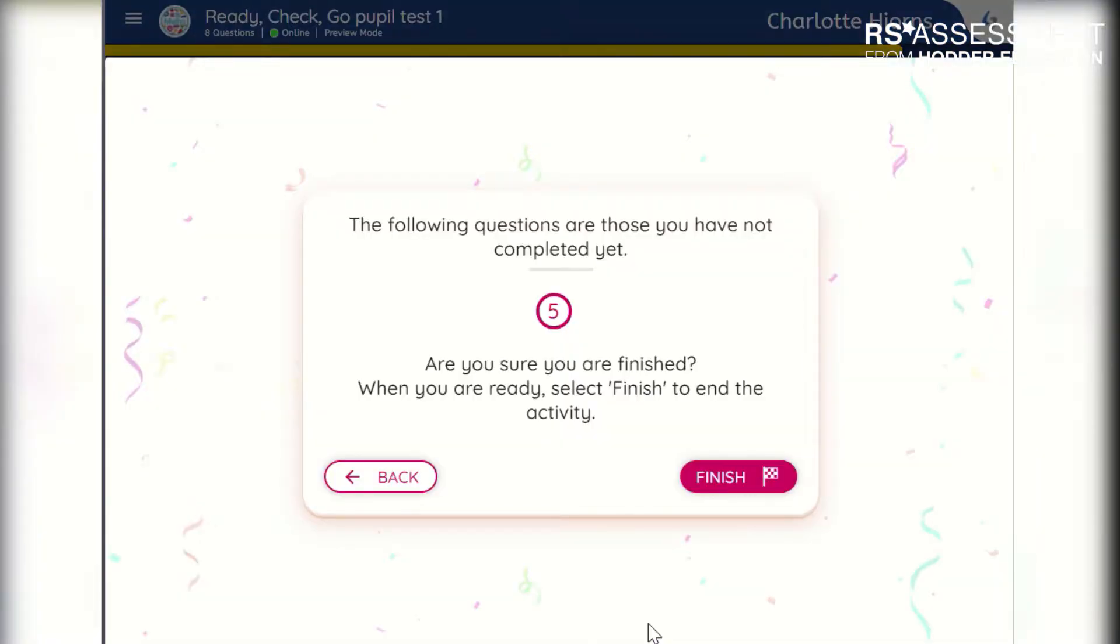At the end of the test, pupils click to finish. They will be shown a list of questions they skipped in case they want to try again. When they click finish, they will be prompted to let their teacher know they are done.